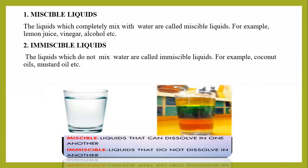Next, two more properties on the basis of solubility with each other. The first one, miscible liquids — the liquids which completely mix with water are called miscible liquids. For example, lemon juice, vinegar, alcohol, etc.